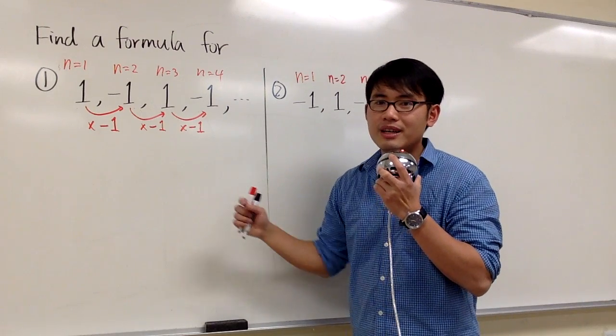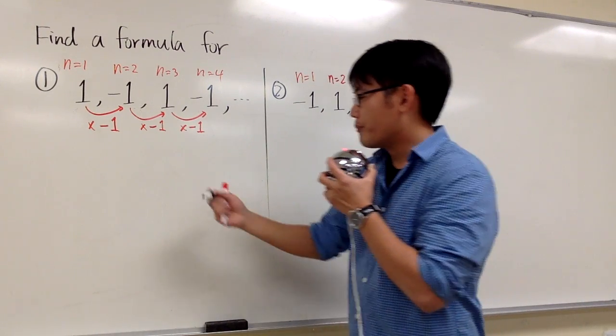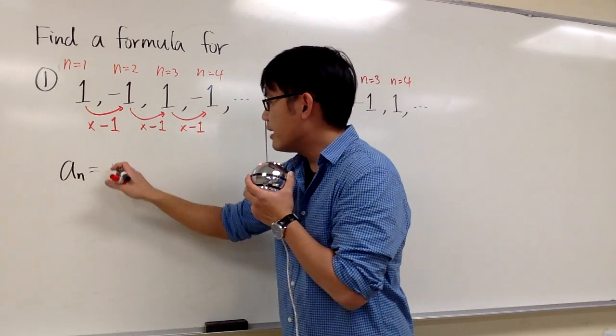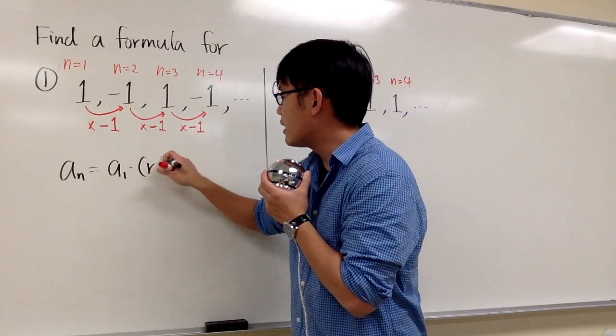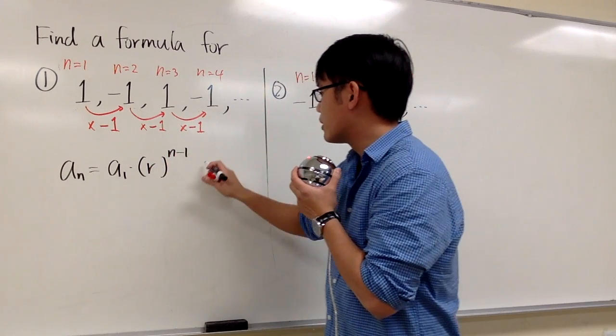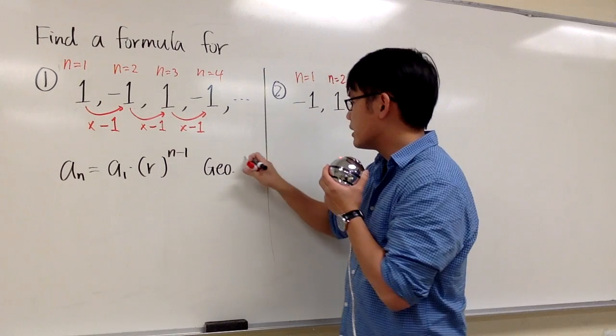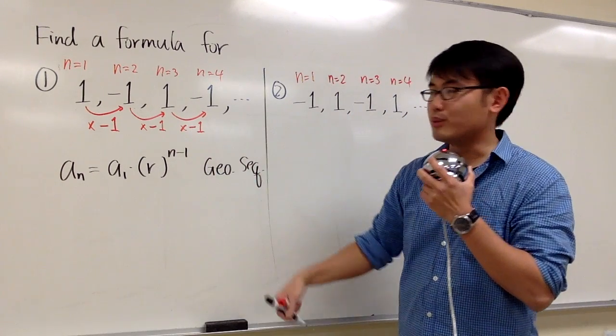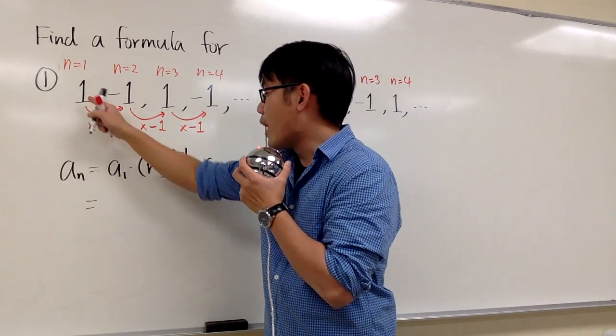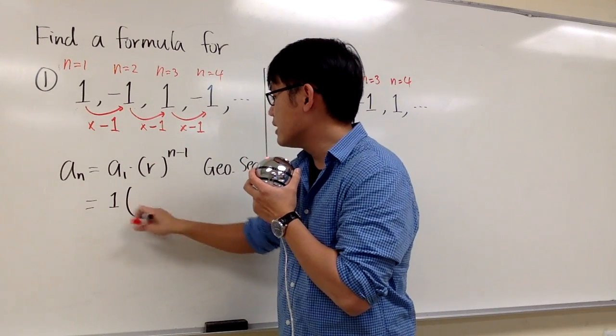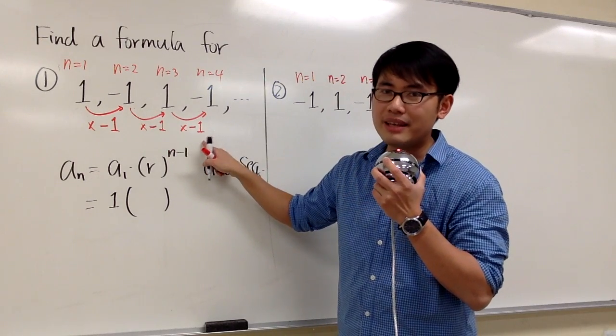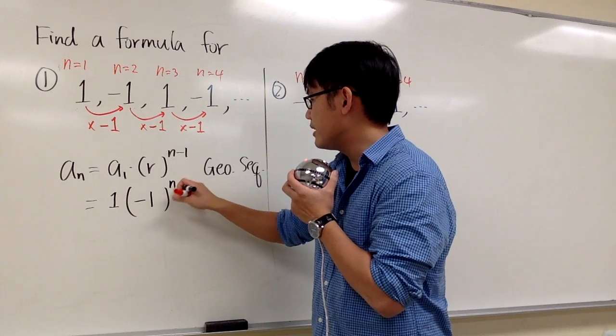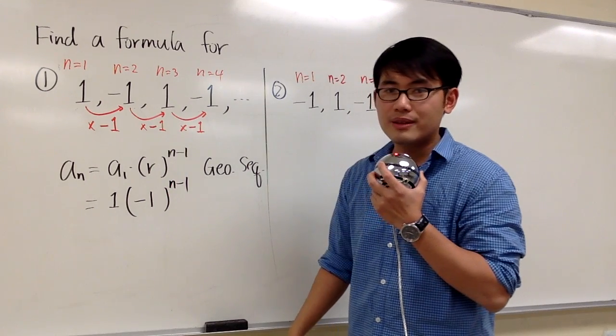this is technically a geometric sequence. So we know a general formula for geometric sequence. An is equal to A1 times r raised to the n minus 1 power. And once again, this is for geometric sequence. Based on this, all I need to do is plug in values. A1 is 1, so we can write down 1. And r is the number that we keep multiplying, it's negative 1. So I put this in the parentheses and raise to the n minus 1 power.